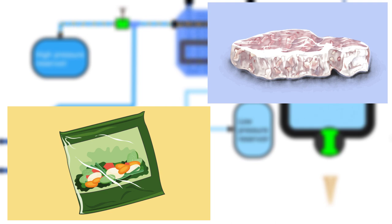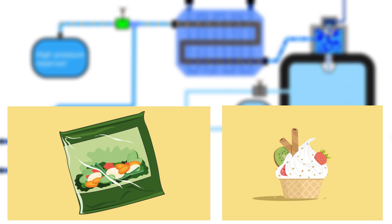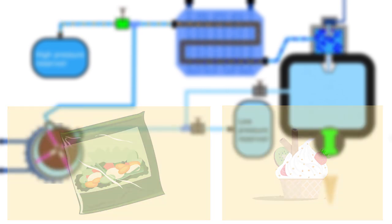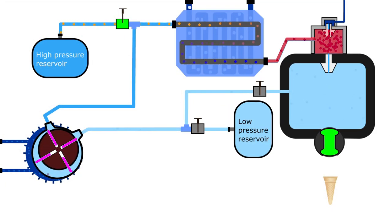We can use the same flash freezing process to create ice cream almost instantaneously. Here's the setup. Liquid CO2 is used as a direct refrigerant to freeze the ice cream mix. After the mix is frozen and the CO2 turns into gas, it is then turned back into liquid by a compressor.